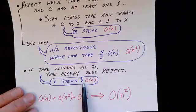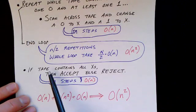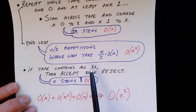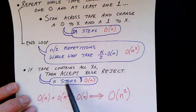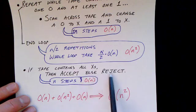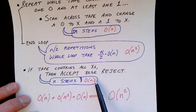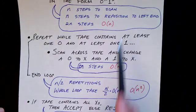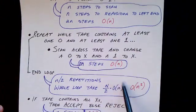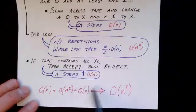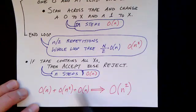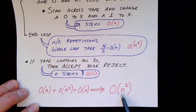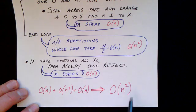The last step of the algorithm is to verify that we've crossed off all the zeros and all the ones, so we make one more pass across the tape all the way to position N to make sure there are no ones remaining. This takes N steps — an order N operation. Combining all steps: order N, then order N², then order N — the N² term dominates. So this algorithm runs in order N² time, and the complexity of this algorithm is N².